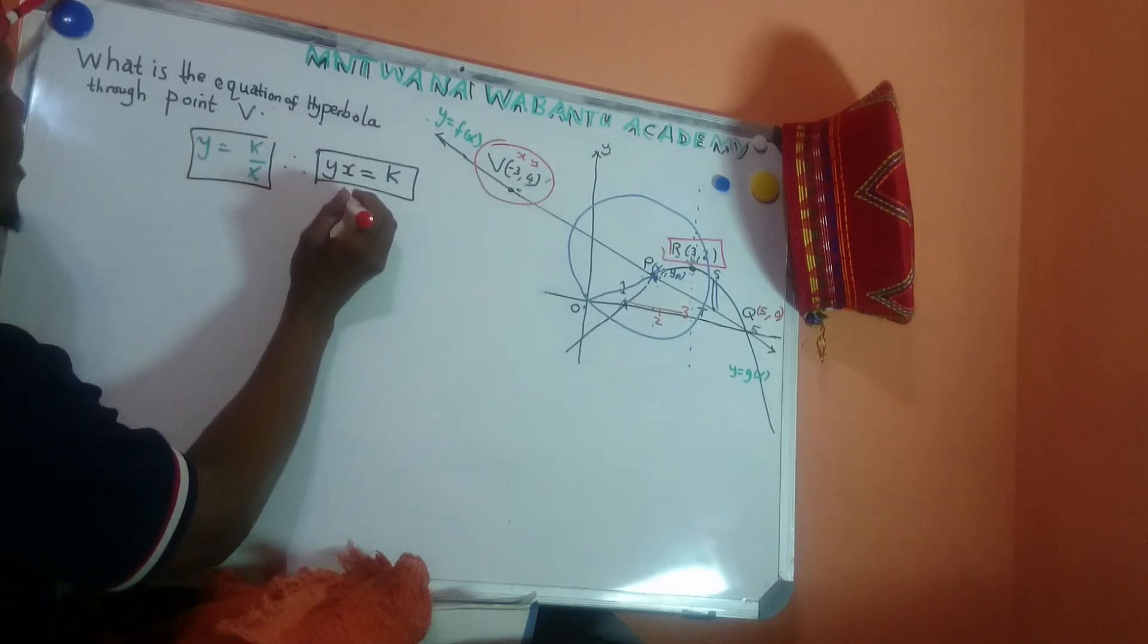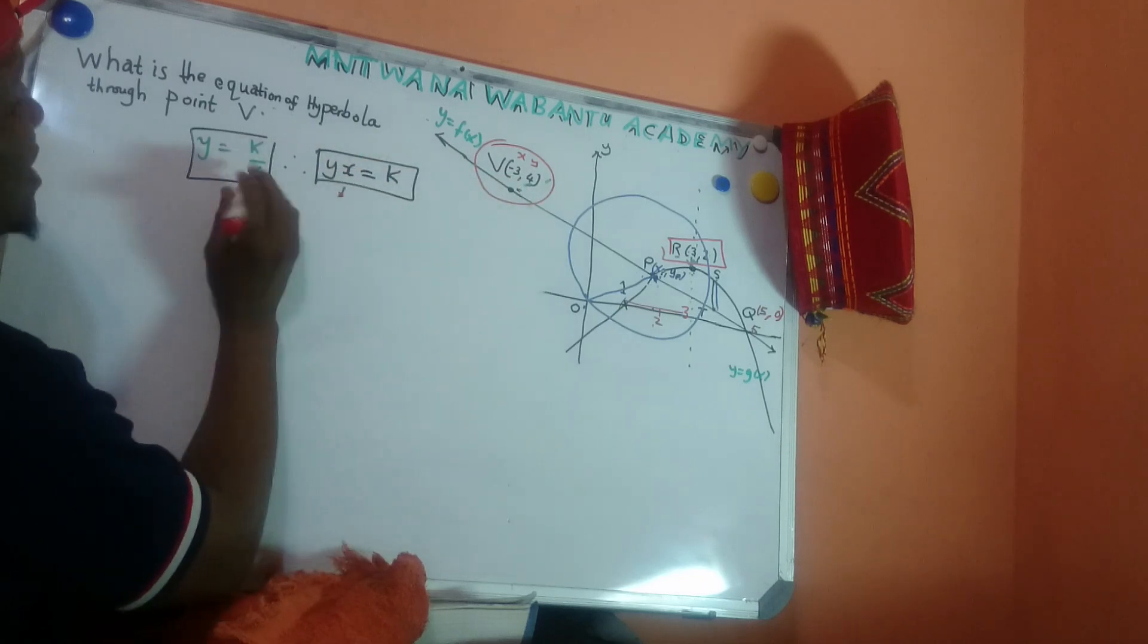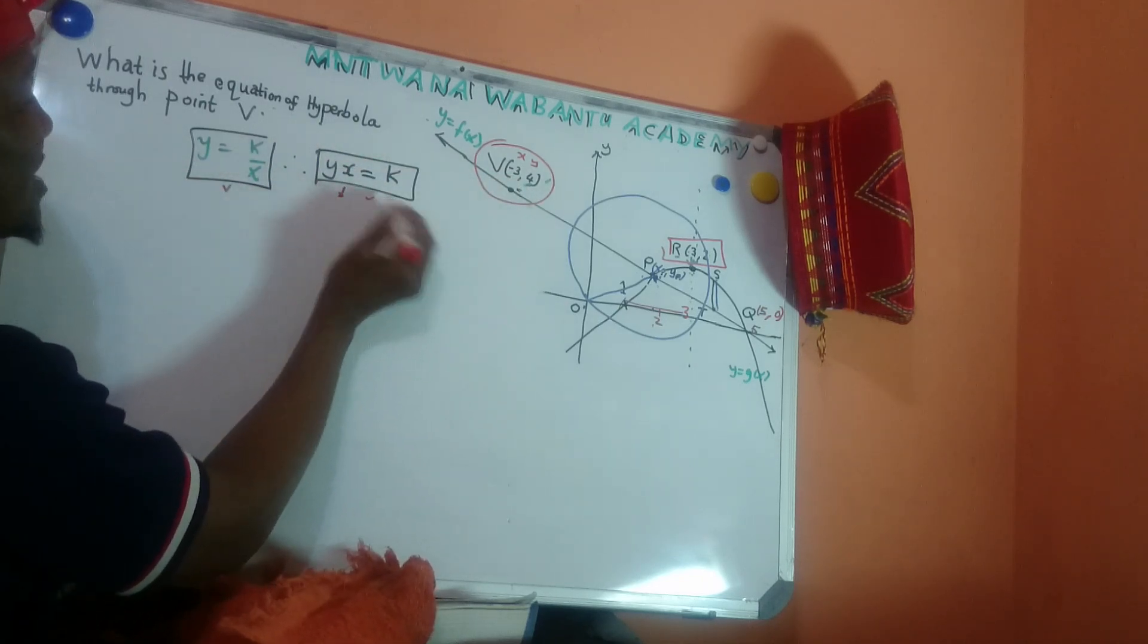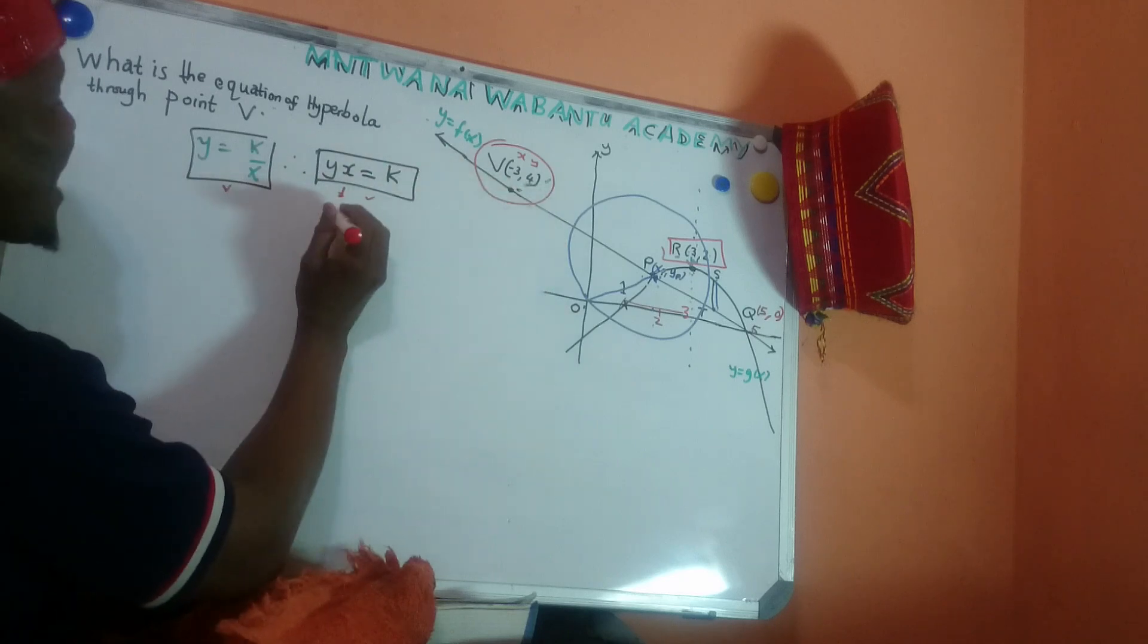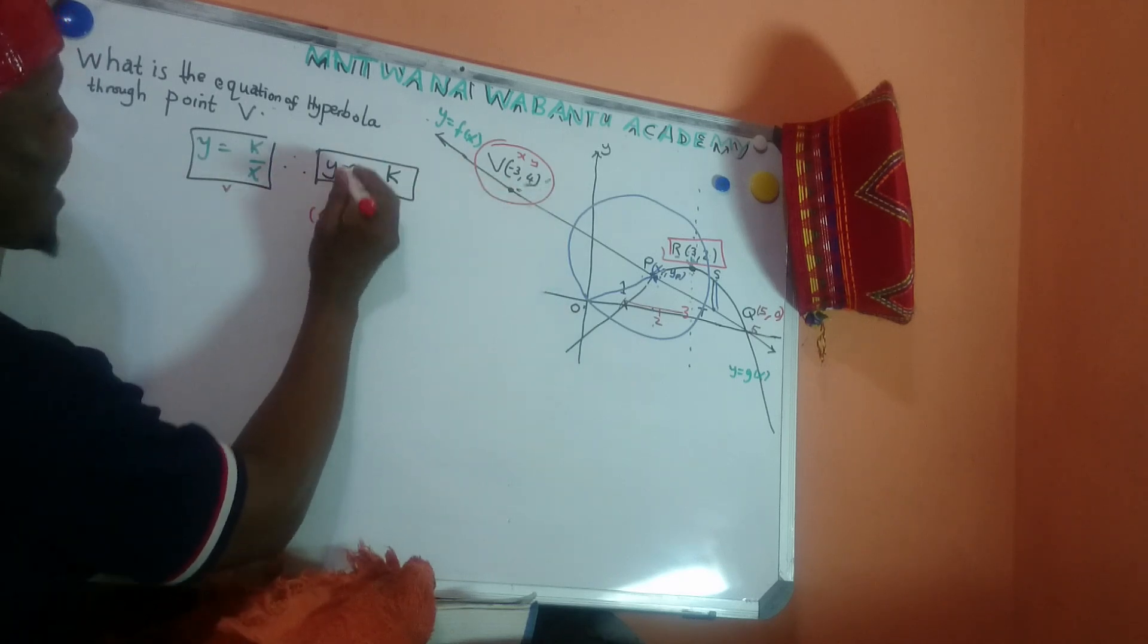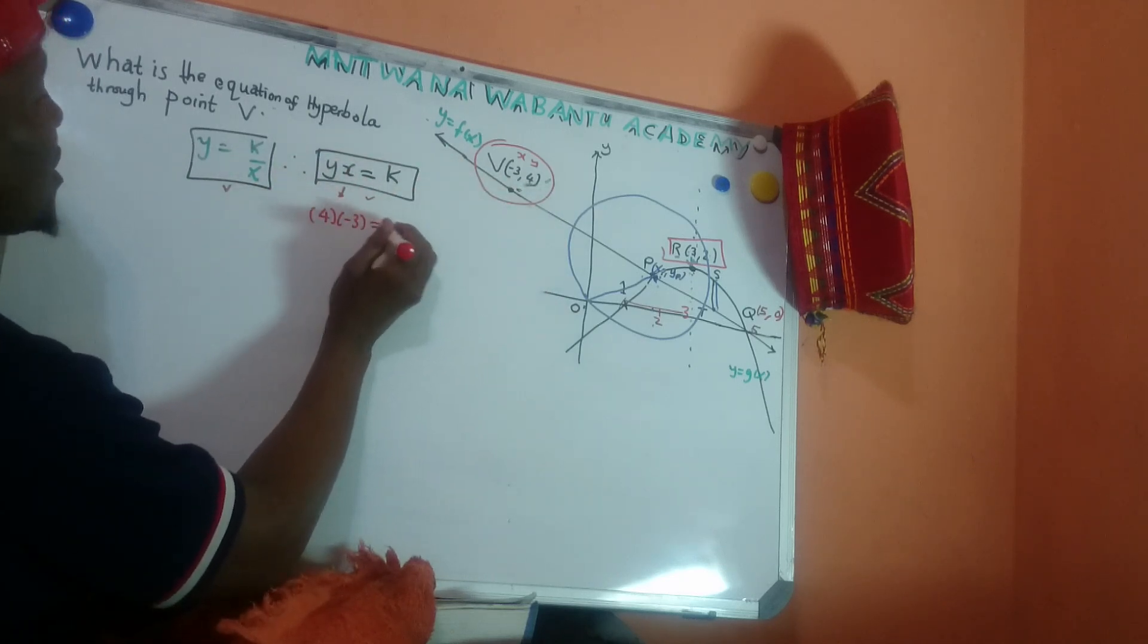To get the value of k. So, what is y? So, I can use this one. This is right away because I have x and y. The same thing. Either use this or use this, you're going to get the same final answer. What is y? Y equal to 4, multiply x. x equal to negative 3, equal to k.